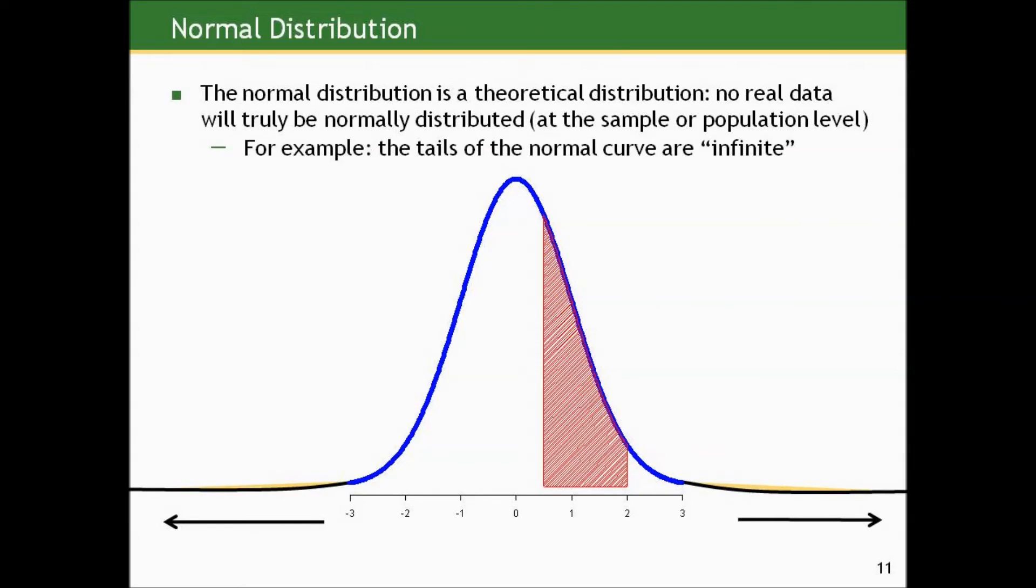Now, the normal distribution is a theoretical distribution. No real sample data will ever truly be normally distributed. In fact, no real population will have a true normal distribution. A lot of things approximate it well at the sample and population level, but this is a theoretical distribution. Just to give you an example, the tails of the normal curve are infinite. For any normal curve, the population that it describes, technically speaking, has values everywhere on the number line.